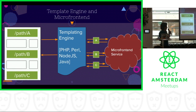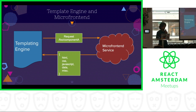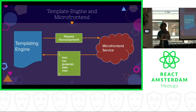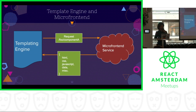Let's zoom in on the interaction between the templating engine and the micro frontend service. The templating engine requests a micro frontend service saying: give me component A at this route. The micro frontend service is responsible for giving it the whole component. A component has HTML representing structure, CSS representing styles, JavaScript representing behavior, and data coming from the backend. The micro frontend service is responsible for sending each of these individual pieces.